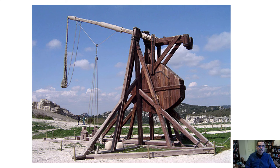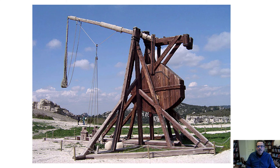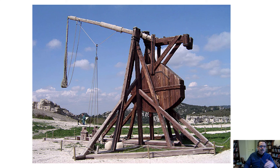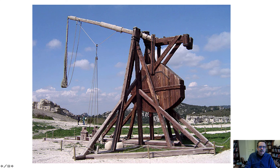This is a trebuchet, an early medieval siege engine used against castles before the age of artillery. If you think about what its finite state machine might look like, there are many possibilities — the people nearby could have their own states. The focal point, the machine itself, could be in a loose or static state as it appears in this image.